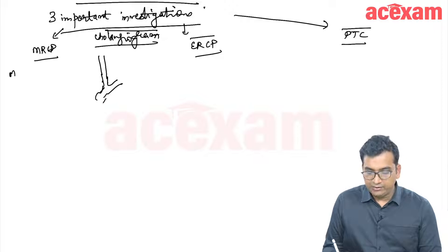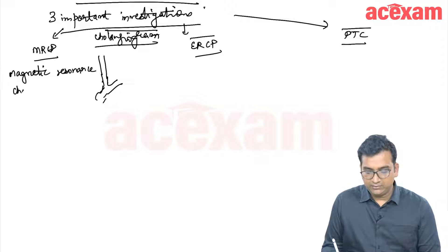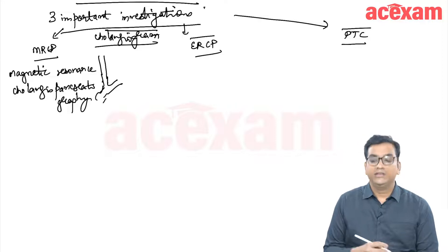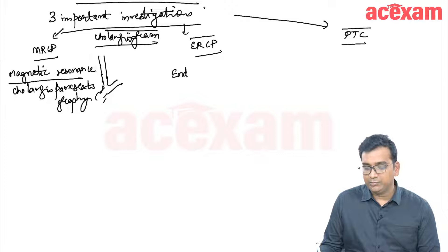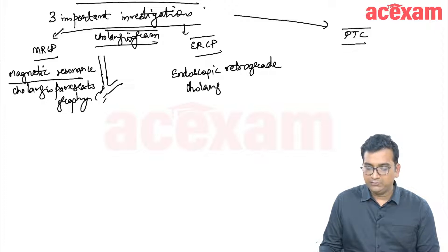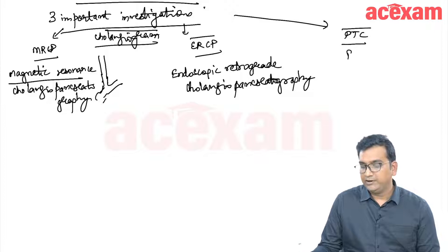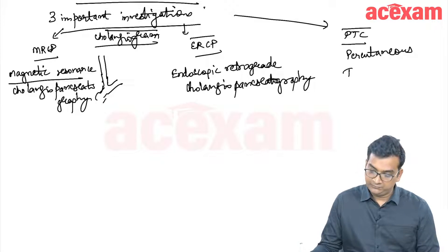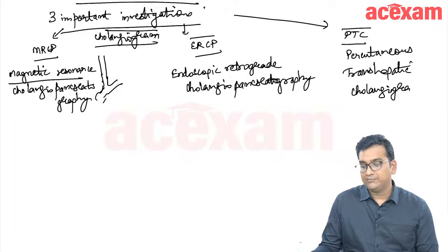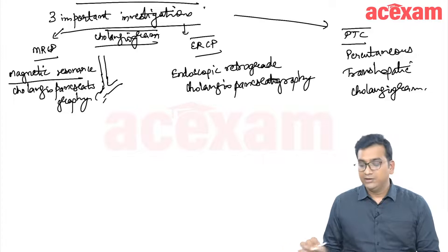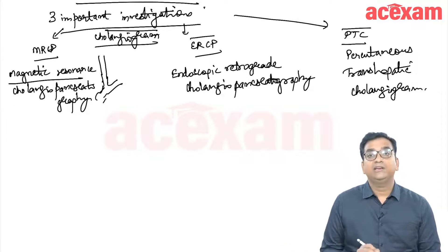MRCP stands for magnetic resonance cholangiopancreatography. ERCP stands for endoscopic retrograde cholangiopancreatography, and PTC stands for percutaneous transhepatic cholangiogram — not pancreatography. There is no pancreatography in PTC. We can get some idea regarding the pancreatic ducts from MRCP and ERCP, but not with PTC.